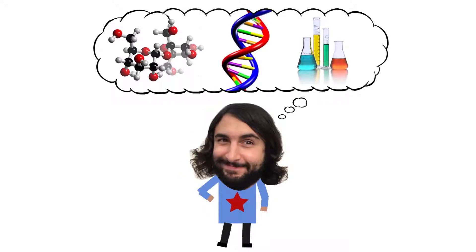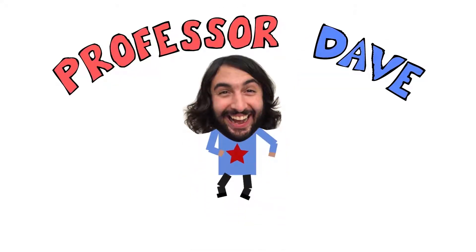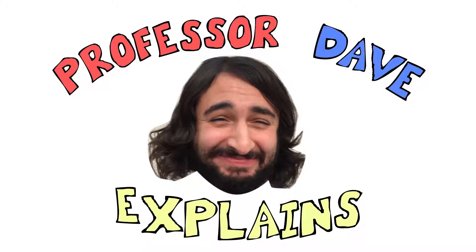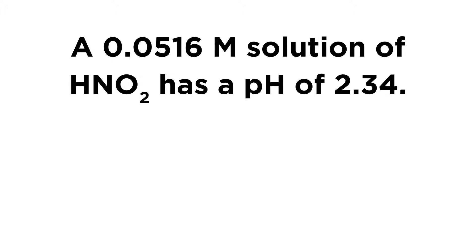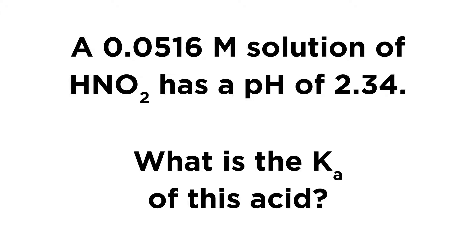He knows a lot about the science stuff, Professor Dave Explains. Okay, let's do some calculations involving pH and pKa. A 0.0516 molar solution of HNO2 has a pH of 2.34, and we want to know what is the Ka of this acid.